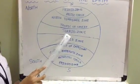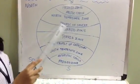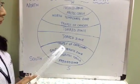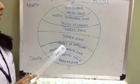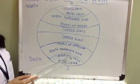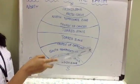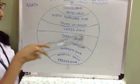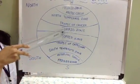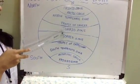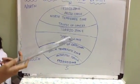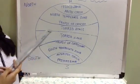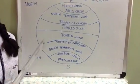Torrid zone: it lies between the tropic of cancer and the tropic of capricorn. The sun's rays here fall directly on this zone, so the temperatures here are the maximum.